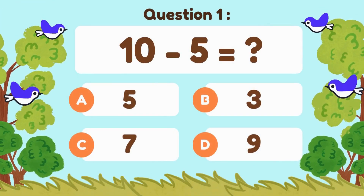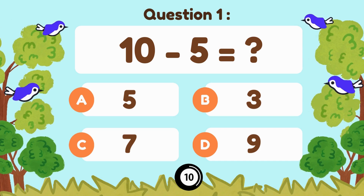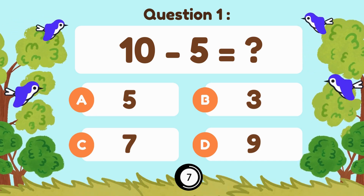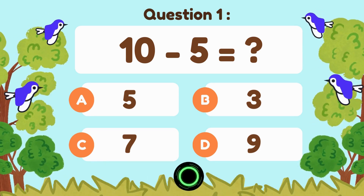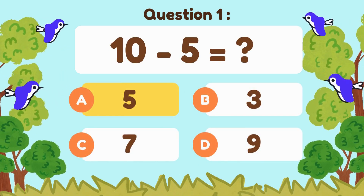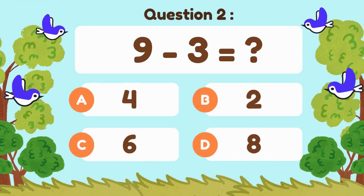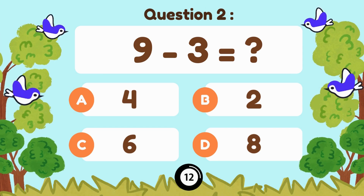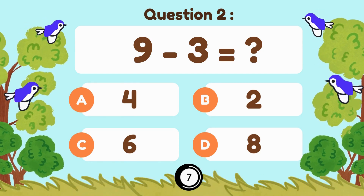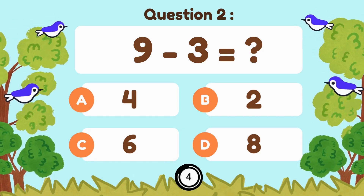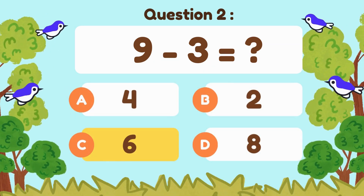10 minus 5. 10 minus 5 is 5. 9 minus 3. 9 minus 3 equals 6.